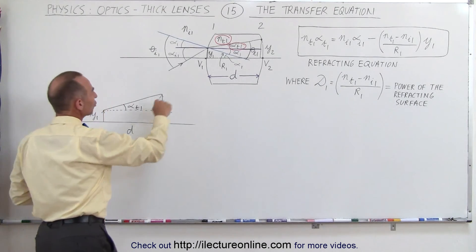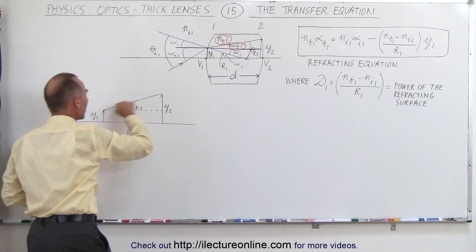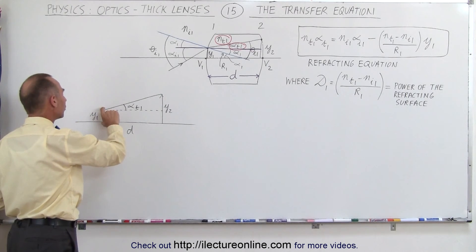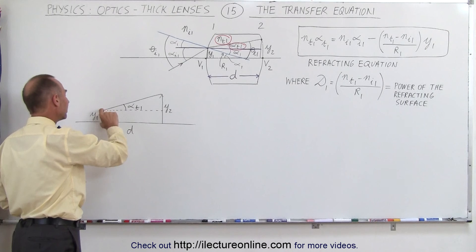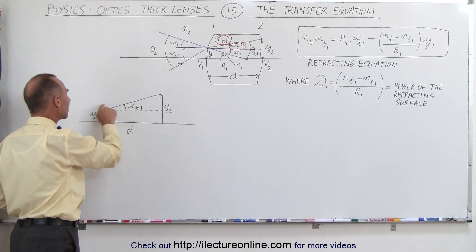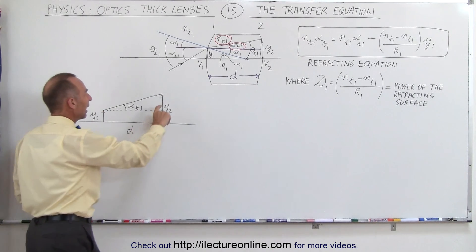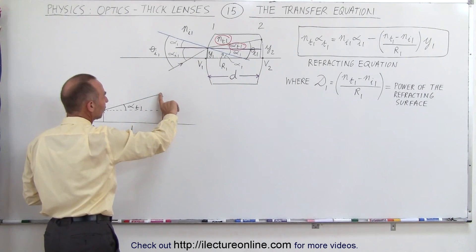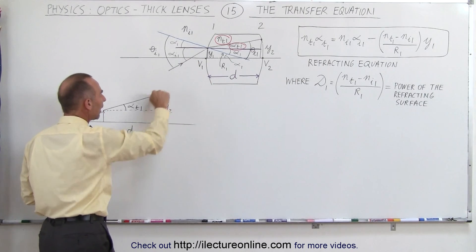So I've taken this triangle right here and we've drawn it here to make it a little bit easier to see. Notice that this is the distance y1 above the optical axis of the entry point, and then the point where it will go through the boundary on the back side of the lens. This is the distance y2 above the optical axis.